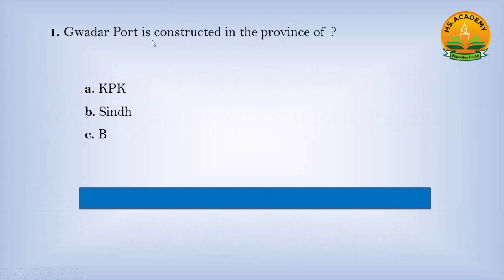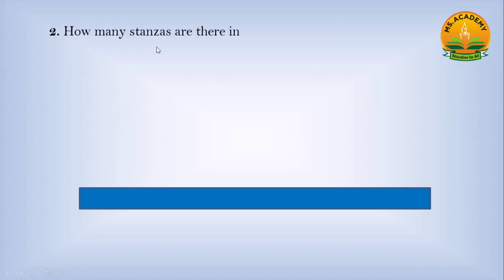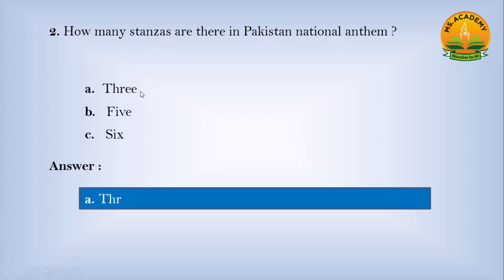Gwadar Port is constructed in the province of: Option A, KPK; Option B, Sindh; Option C, Balochistan. Answer: C — Balochistan. How many stanzas are there in Pakistan's National Anthem? Option A, 3; Option B, 5; Option C, 6. Answer: A — 3.